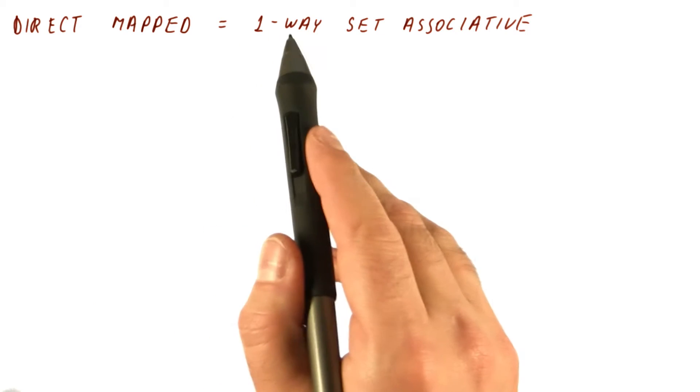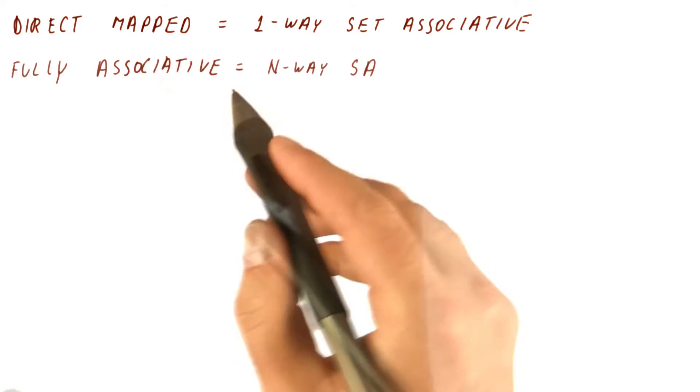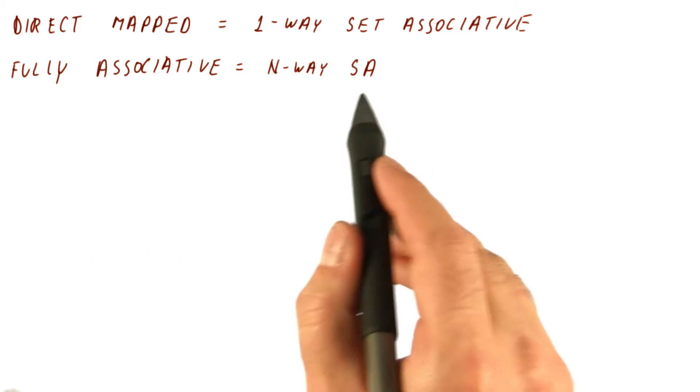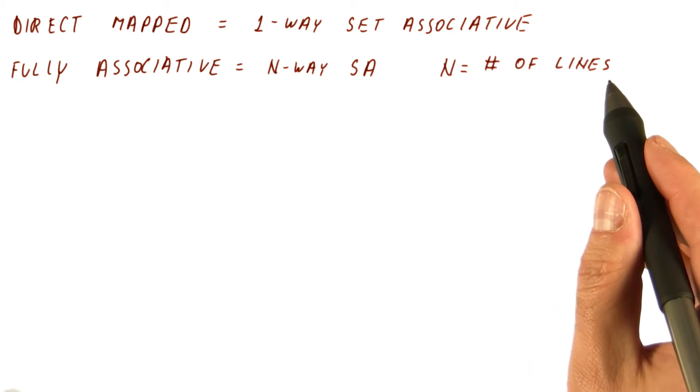So for example, a direct map cache is actually a one-way set associative cache. And a fully associative cache is an n-way set associative cache where n is equal to the number of lines.